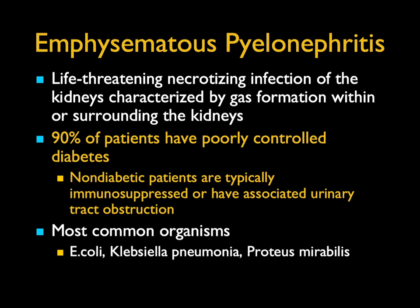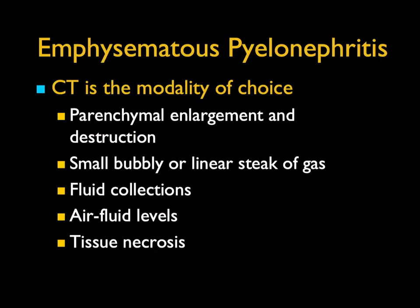We have a few well-defined unique renal infections. XGP is one, and the other is emphysematous pyelonephritis — typically in a diabetic, often a debilitated patient, think nursing home. It's a life-threatening, necrotizing infection of the kidneys characterized by gas formation within and surrounding the kidney. 90% of patients have poorly or uncontrolled diabetes; those who aren't diabetic are usually immunosuppressed. Most commonly E. coli, but Klebsiella and Proteus are right up there. CT is the study of choice — ultrasound can miss the diagnosis because air may look like artifact. We see parenchymal enlargement, destruction of the parenchyma with air of varying amounts, fluid in and around the kidney, air-fluid levels with necrosis, and tissue necrosis.